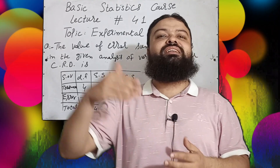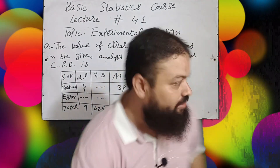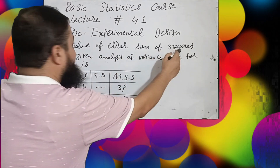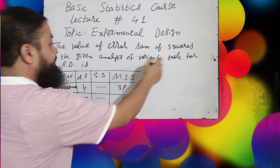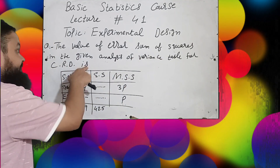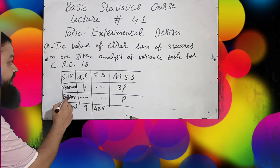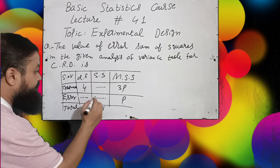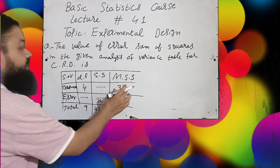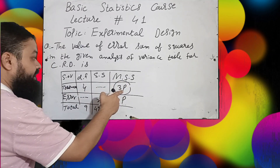Question number one: What is the value of the error sum of squares in the given analysis of variance table for a completely randomized design? We have to find the error sum of squares — let's call it x. You know that s-squared for treatment is the variance of the treatment, and we get it by dividing the sum of squares by its degrees of freedom.